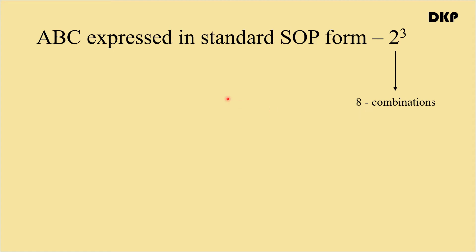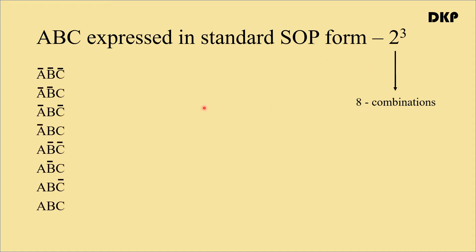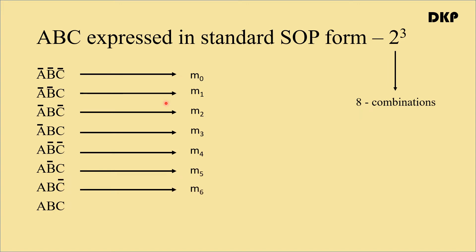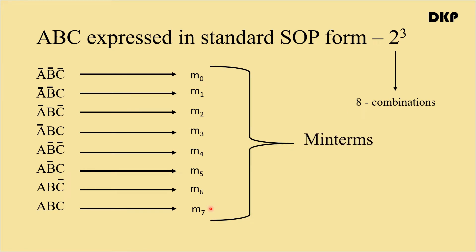Let us see how to express ABC in standard SOP form. These are the eight combinations of the variables ABC. The first combination is A bar B bar C bar, designated as M0; A bar B bar C as M1; A bar B C bar as M2; A bar B C as M3; A B bar C bar as M4; A B bar C as M5; A B C bar as M6; and A B C as M7. These terms M0 through M7 are called min terms.